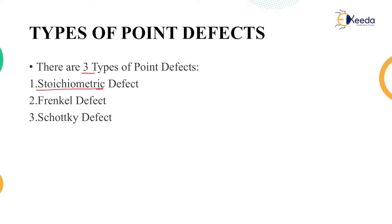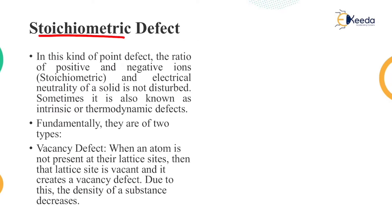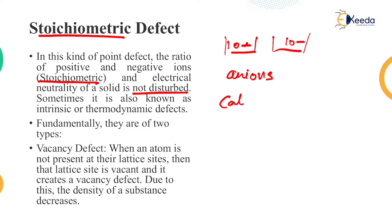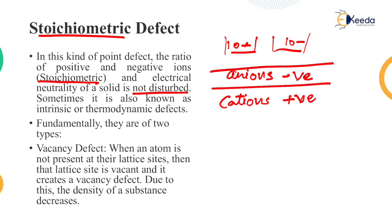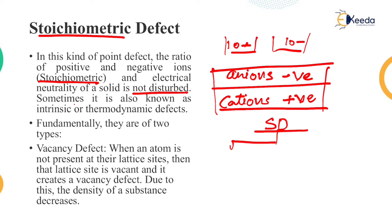The three types are: stoichiometric defect, Frenkel defect, and Schottky defect. In a stoichiometric defect, the ratio of positive and negative ions — that is the stoichiometry — and electrical neutrality of a solid is not disturbed. So if I have 10 positive ions, I will have 10 negative ions. Cations are positive ions and anions are negative ions. These will be well balanced and thus there will be no electronic effect. Sometimes it is known as an intrinsic or thermodynamic defect.